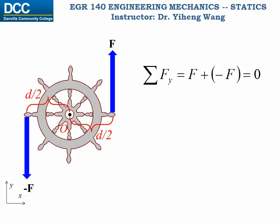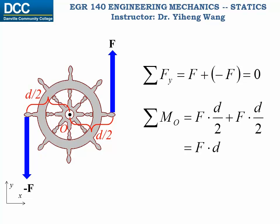However, we can also calculate the total moment caused by these two forces about the center of the wheel. Since both forces are causing counterclockwise rotational effect about point O, they both create positive moments about point O, and the total moment is positive F times d, with d being the perpendicular distance between the lines of action of these two forces.